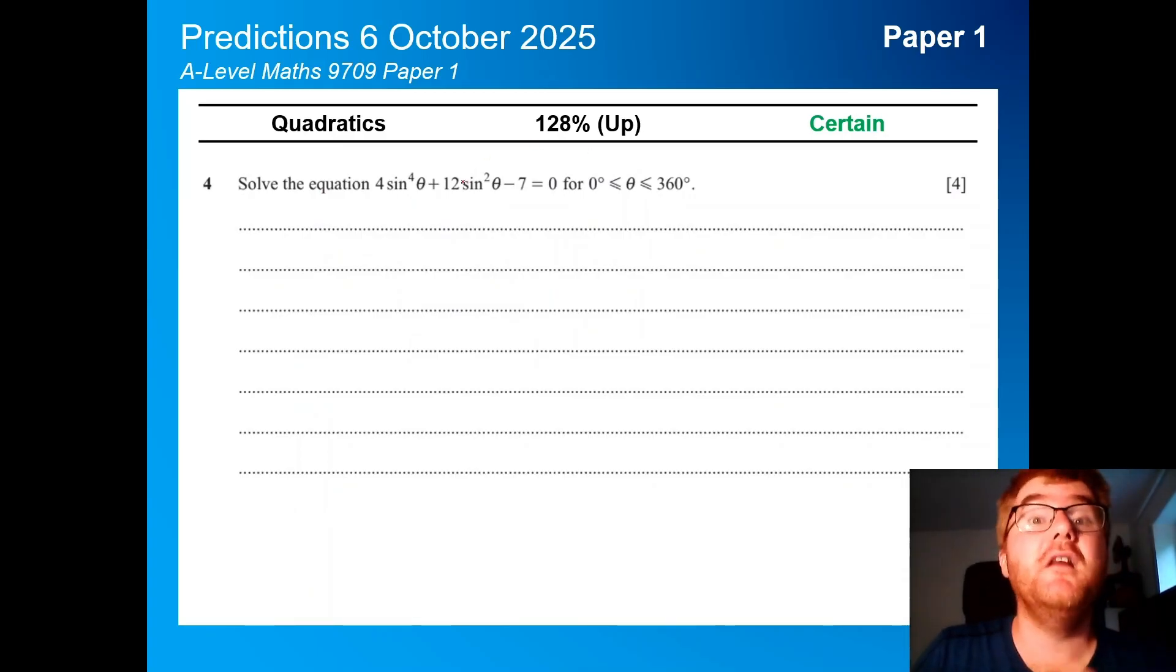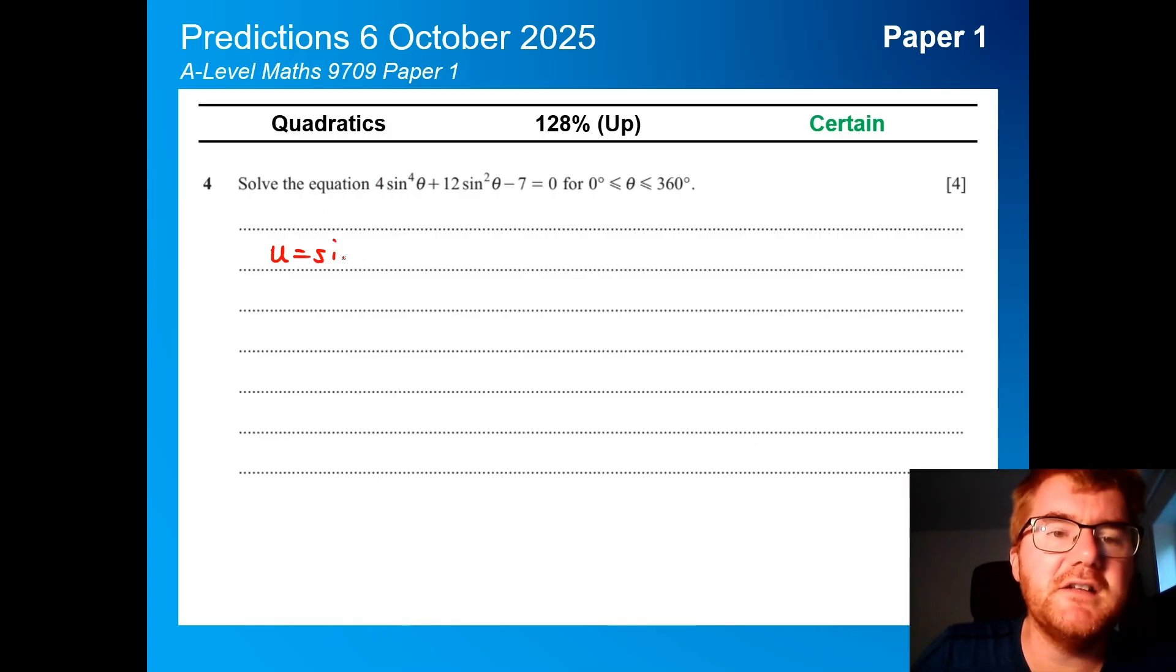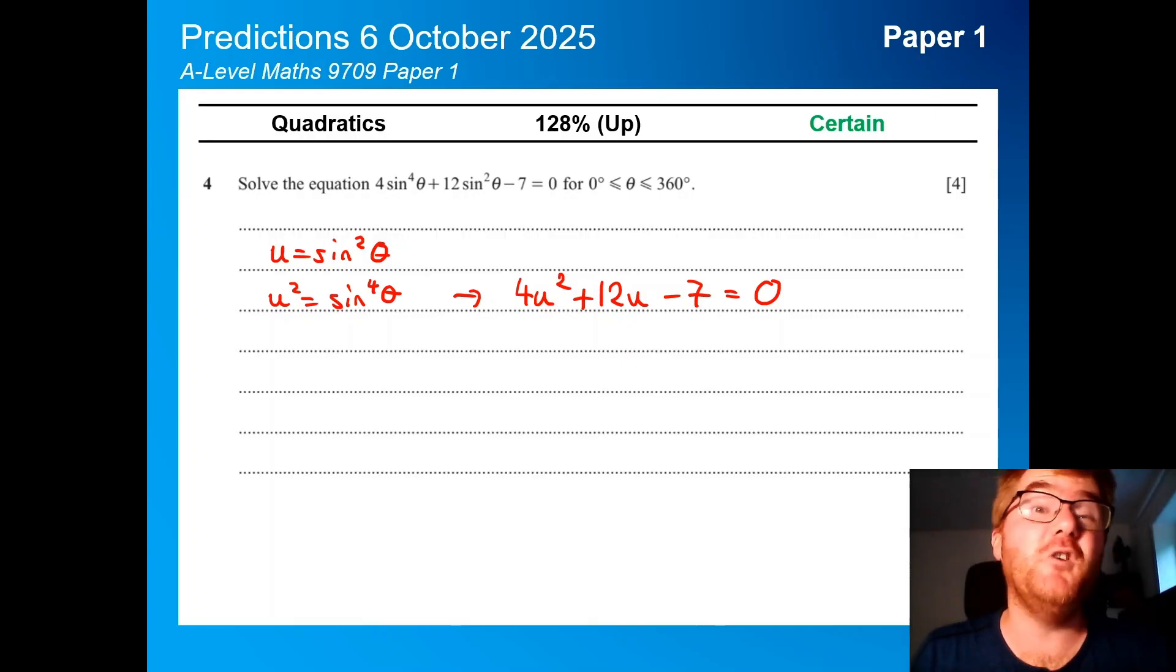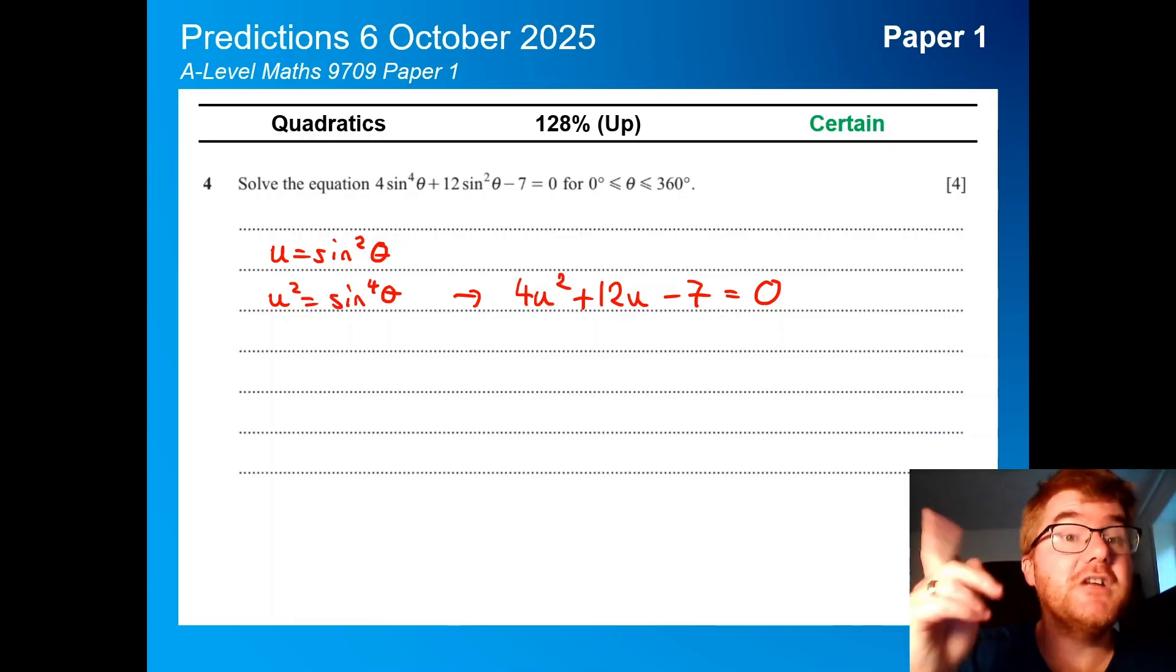Also, quadratics. I put another trig equation here, but this is my reason. Even though strictly speaking this is a trig equation question, we can actually use this idea of let u equal sine squared theta, therefore u squared is sine theta to the power of 4, and so we can transform this into a quadratic that we solve. So even though quadratics itself doesn't come up as an individual question that often, it's often integrated into other questions. If you're not sure about quadratics in general, do check out the video above.